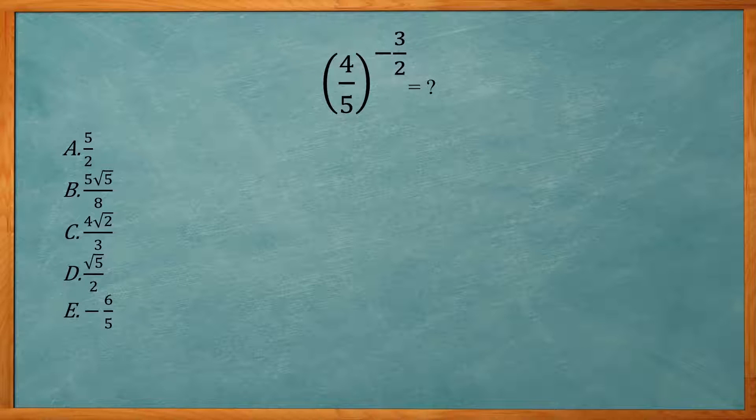All right, so this one wants to know what's 4 fifths raised to the negative 3 halves power. So you could work this out and get it into square root form and reduce things and get it into one of these answer choices. But another way you can do is just figure out what this is on a calculator. So in your calculator, do parentheses 4 divided by 5, close parentheses, caret, parentheses, negative 3 divided by 2. So when you get that, you get about 1.3975.